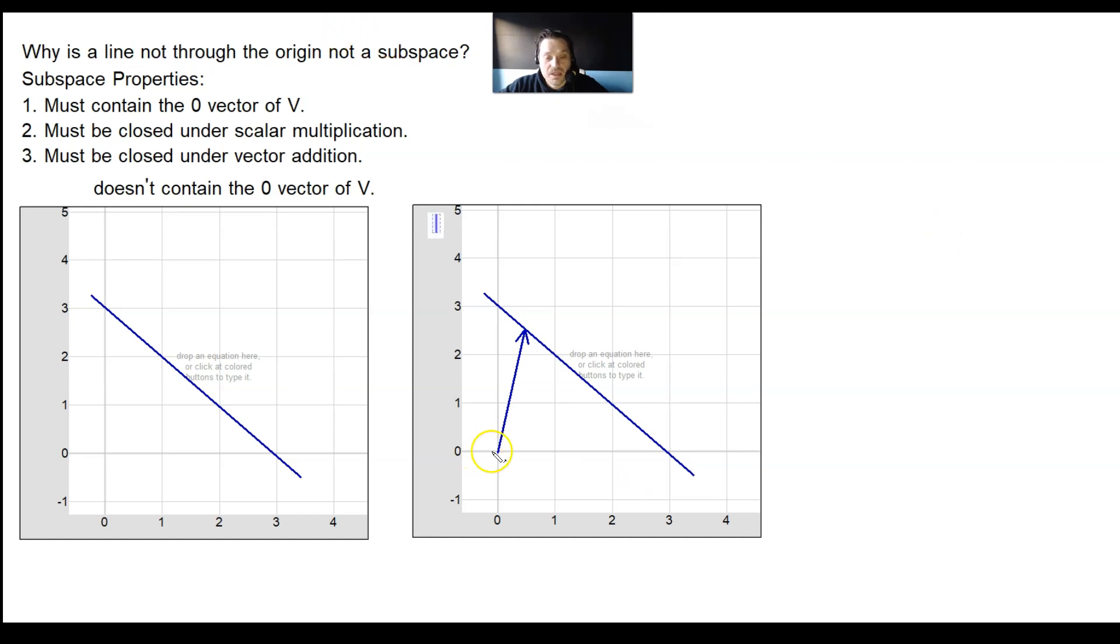If you draw a scalar multiple of this vector up to here, you see how that scalar multiple is not on the line. So this is just an example that basically allows you to conclude that scalar multiples of vectors are off the line.